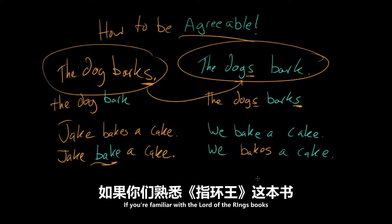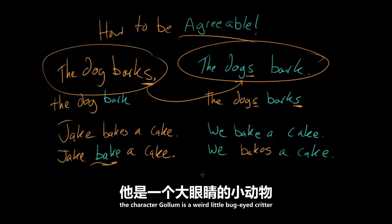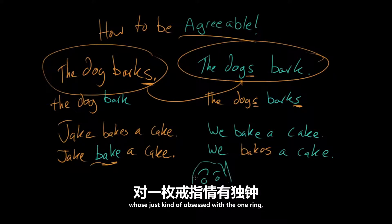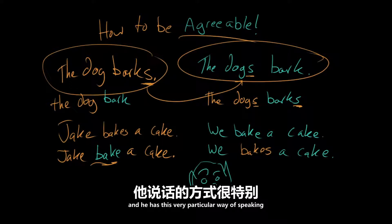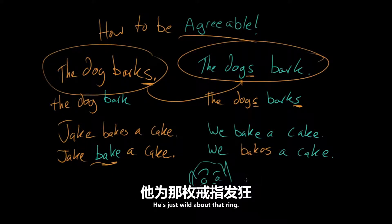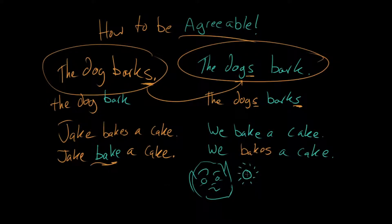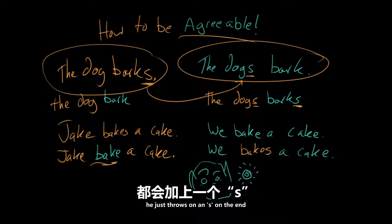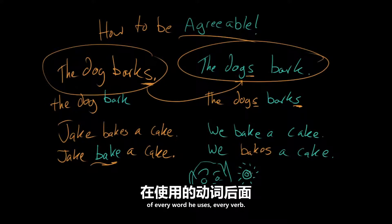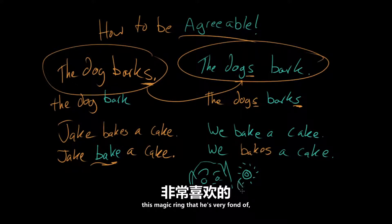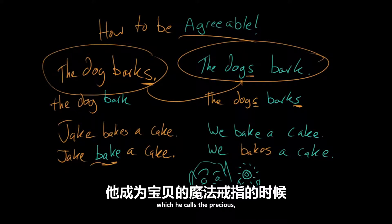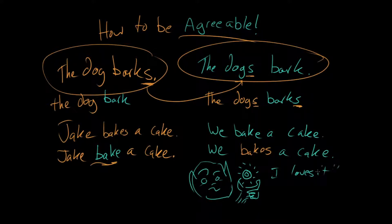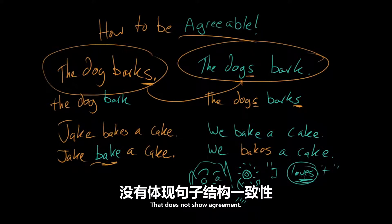If you're familiar with the Lord of the Rings books or movies, if you remember Gollum — this is a weird little bug-eyed critter who's just kind of obsessed with the one ring. He has this very particular way of speaking that is not, strictly speaking, standard. He's just wild about that ring. The way he refers to everything, he just throws an S on the end of every verb. So if he's talking about this magic ring that he's very fond of, which he calls the precious, he wouldn't just say I love it. He'd say I loves it. And that's not correct. That does not show agreement.